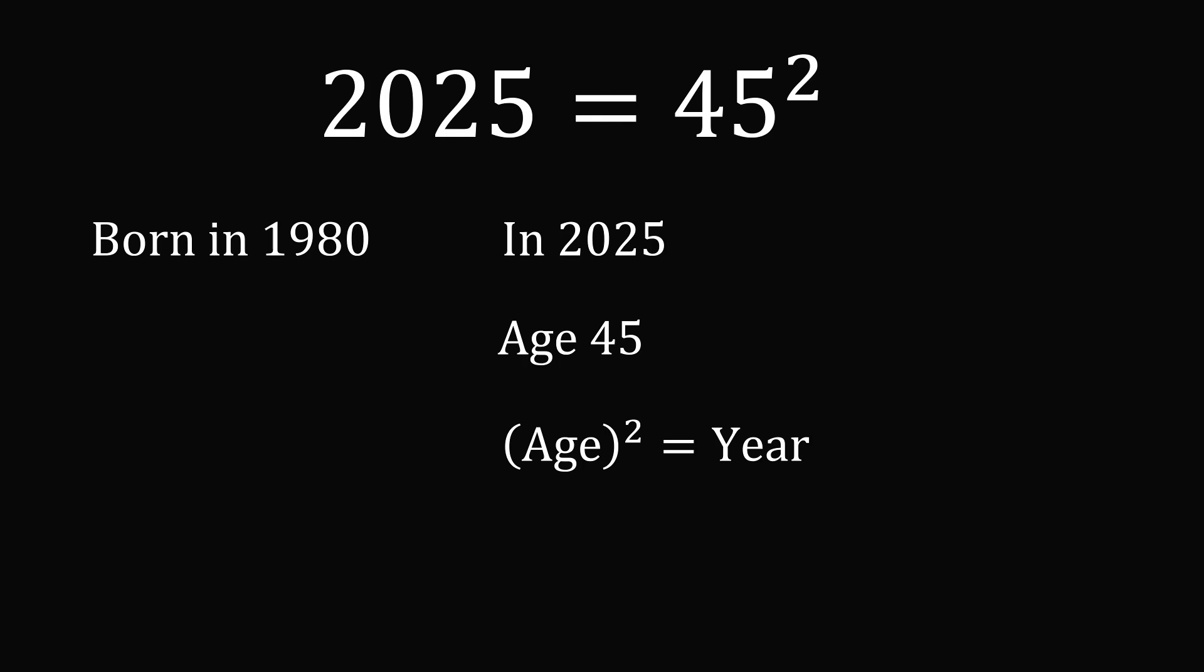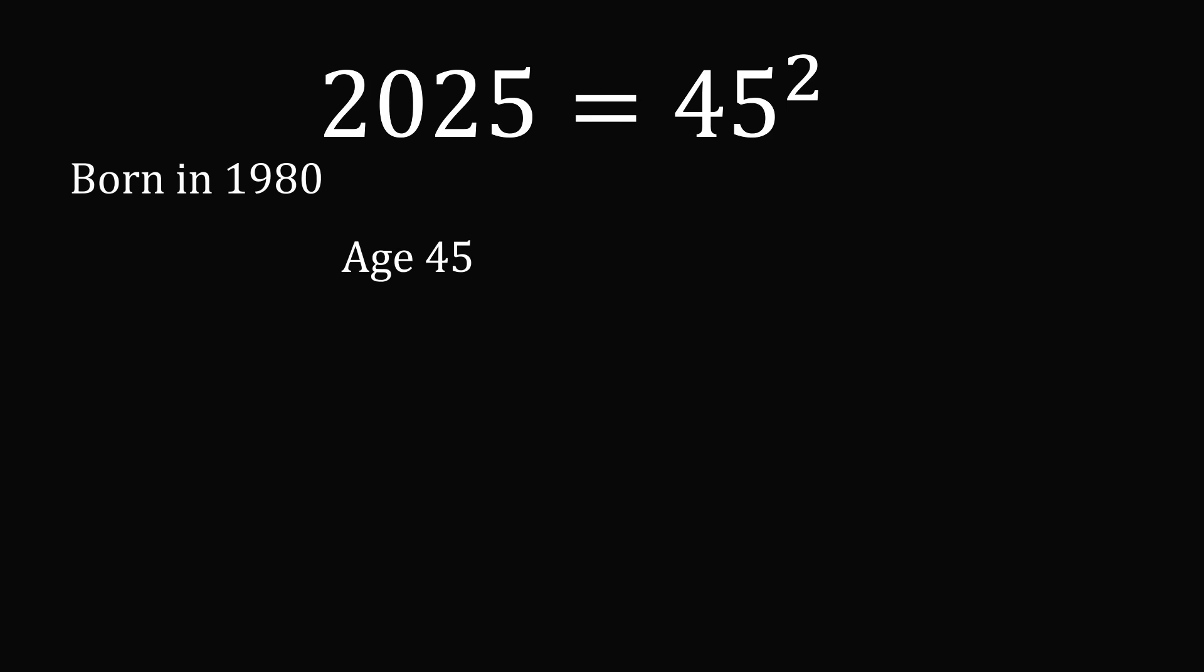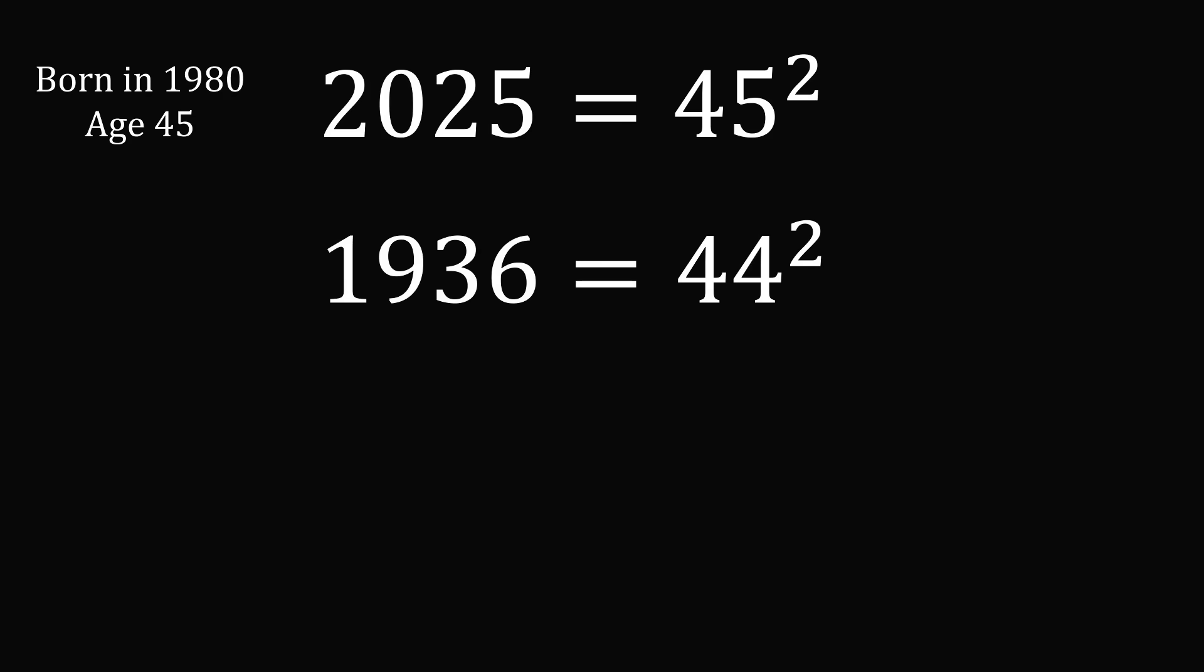This is not a common occurrence. When is the last time this could have happened? 2025 is equal to 45 squared. So the last year that would be a square number would be 44 squared and that's equal to 1936.